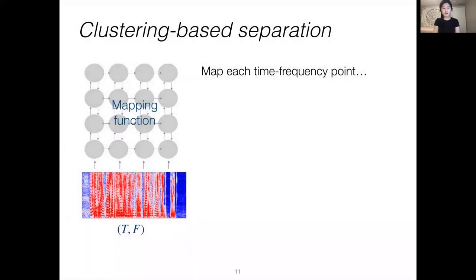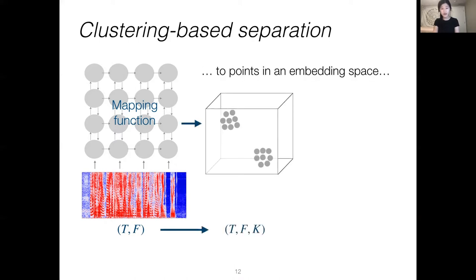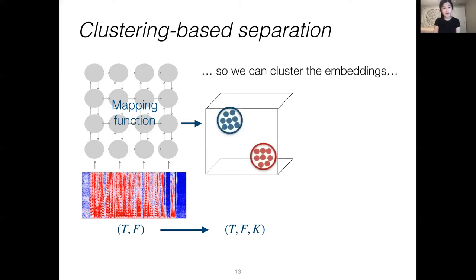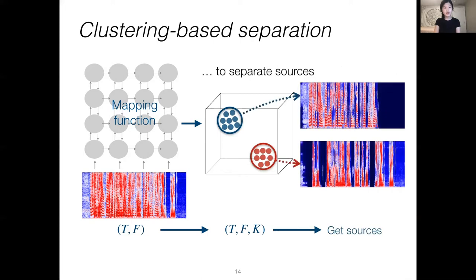Our confidence measure is based on clustering-based source separation algorithms. Given the spectrogram of an input audio mixture, clustering-based models are trained to map each time-frequency point to embeddings in a higher dimensional space. The training objective encourages time-frequency bins from different sources to be far from each other in the embedding space, and bins from the same source to be close together. This way, at inference time, we can simply cluster the embeddings to estimate the original sources. We focus on clustering-based algorithms due to their interpretability.